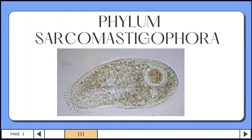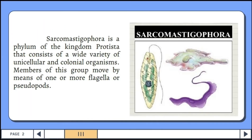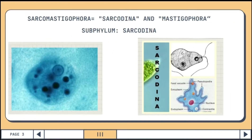Phylum Sarcomastigophora is a phylum of the kingdom Protista that consists of a wide variety of unicellular and colonial organisms. Members of this group move by means of one or more flagella or pseudopods. Sarcomastigophora comes from the combination of words Sarcodina and Mastigophora, which are characterized under the phylum.